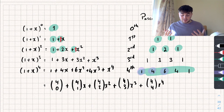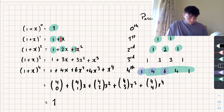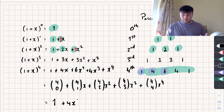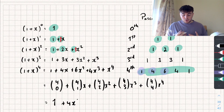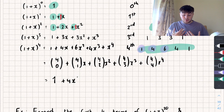If you work this out on your calculator: 4 choose 0 gives us 1, 4 choose 1 gives us 4, so plus 4x. You can see that is going to give us the expansion, so we don't actually need to draw out Pascal's triangle every time to expand something of this form. Let's take a look at another example.